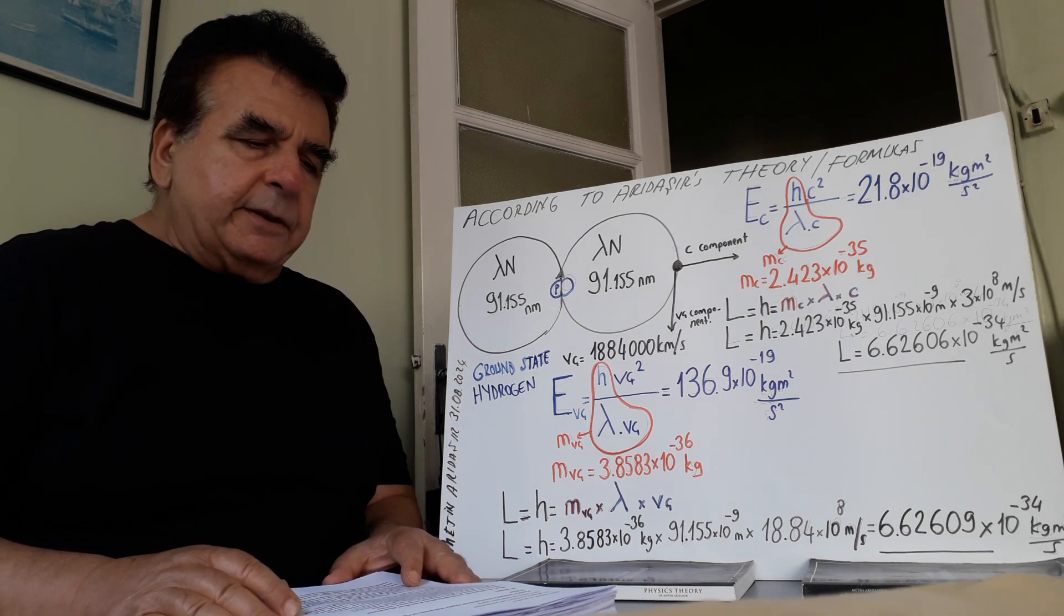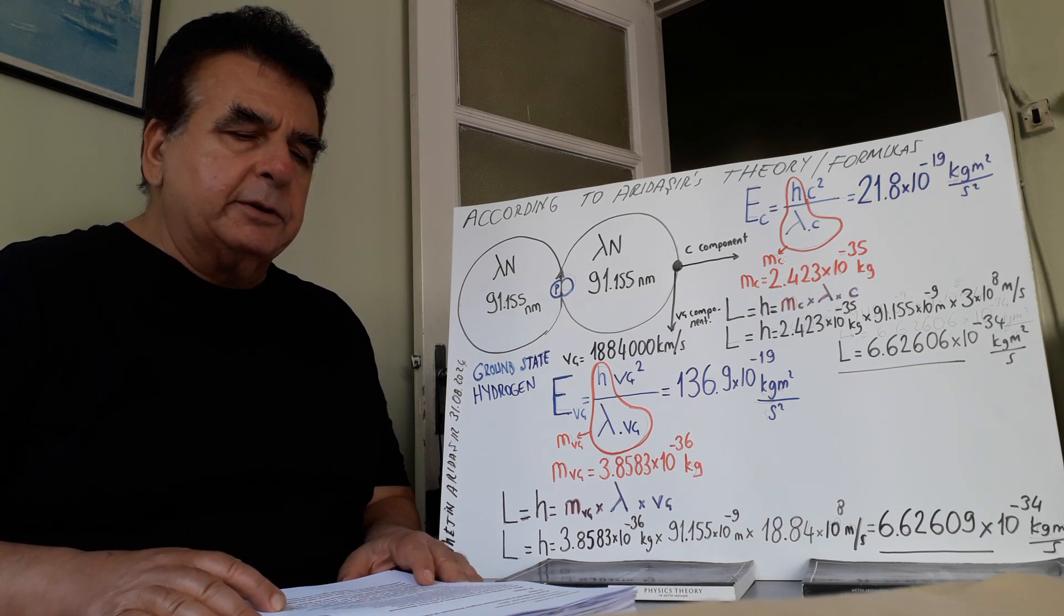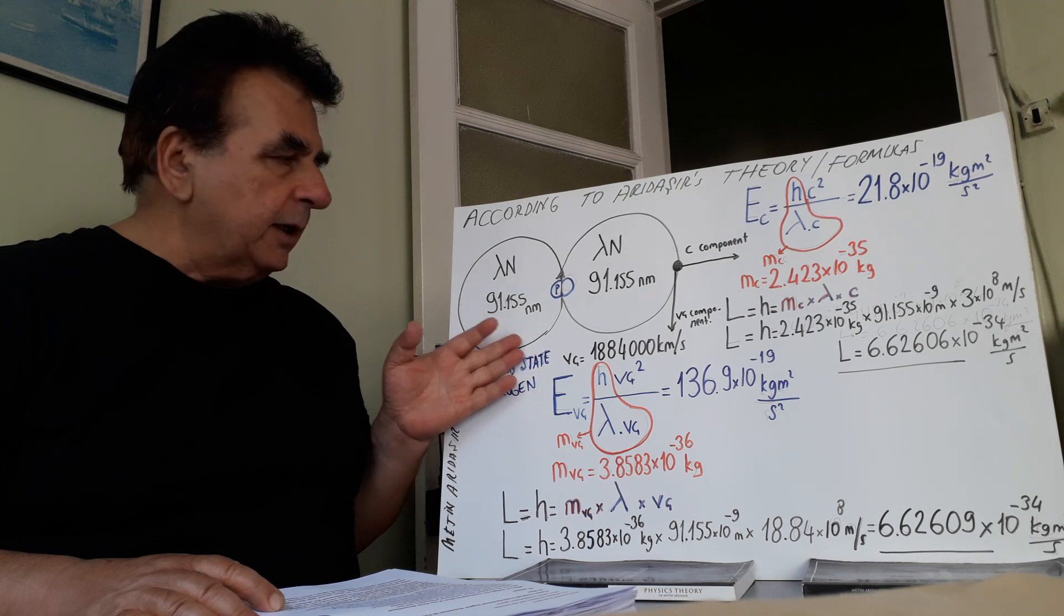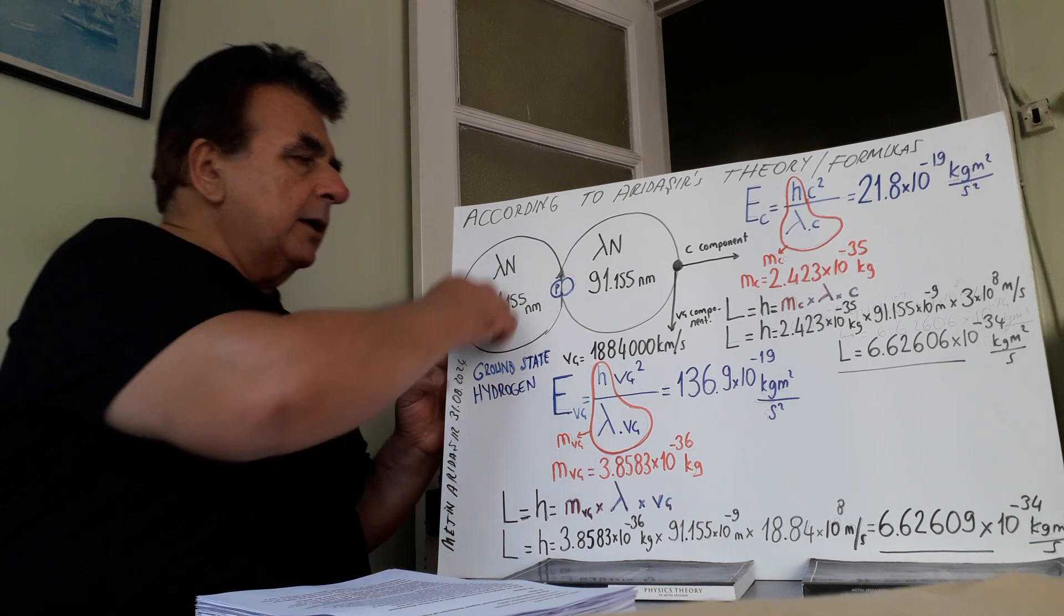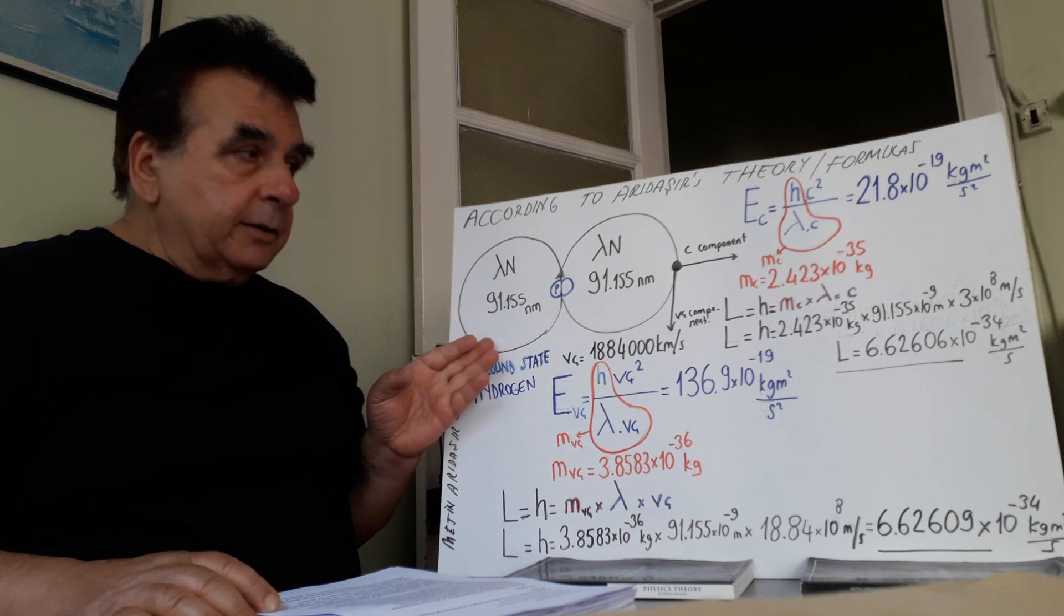Planck's constant is non-quantized angular momentum of photon in an atom. This is hydrogen, for instance. This is electron motion form. This is proton. Ground state, at ground state.